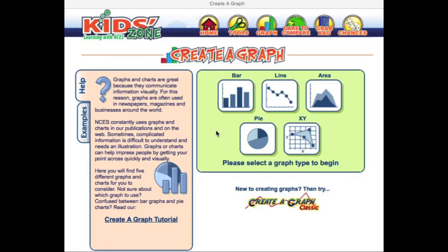First, we need to figure out what graph we should make. For the most part, line graphs are useful when we track changes over a period of time. Bar graphs are good for comparing things between different groups. And pie charts, well, they let us see parts of a whole.